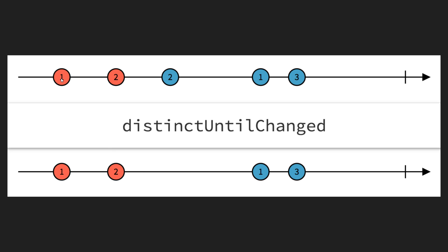Here is the marble diagram. The source observable emits values 1, 2, 2, 1, 3. After applying distinctUntilChanged: 1 is the first item so it goes through. Next is 2 — checked with previous item 1, they are different, so 2 is emitted. The third item 2 is checked with the previous item 2 — they are equal, so it is skipped and not emitted.